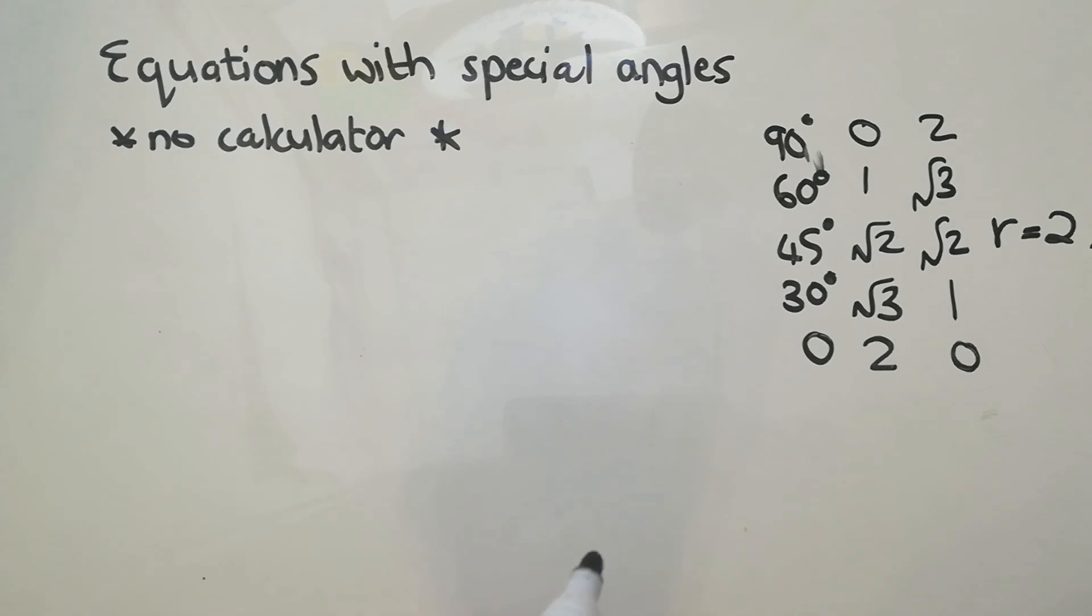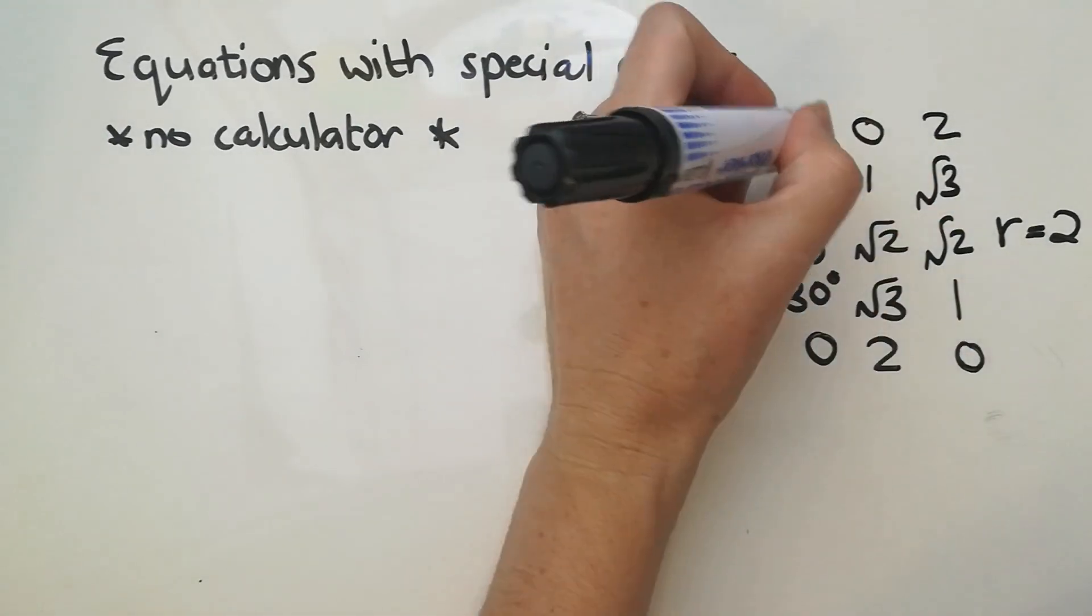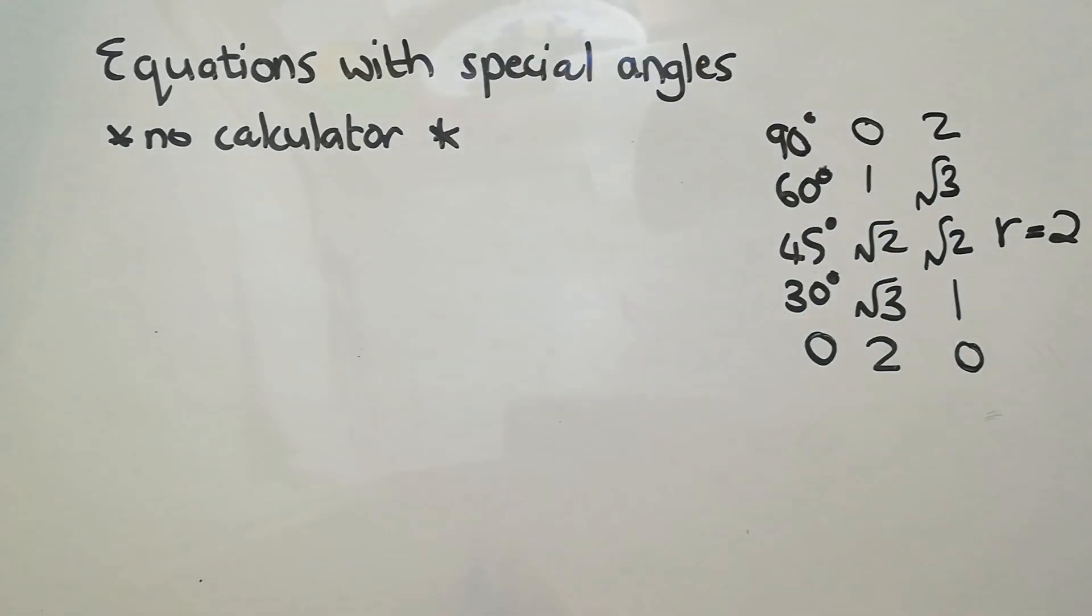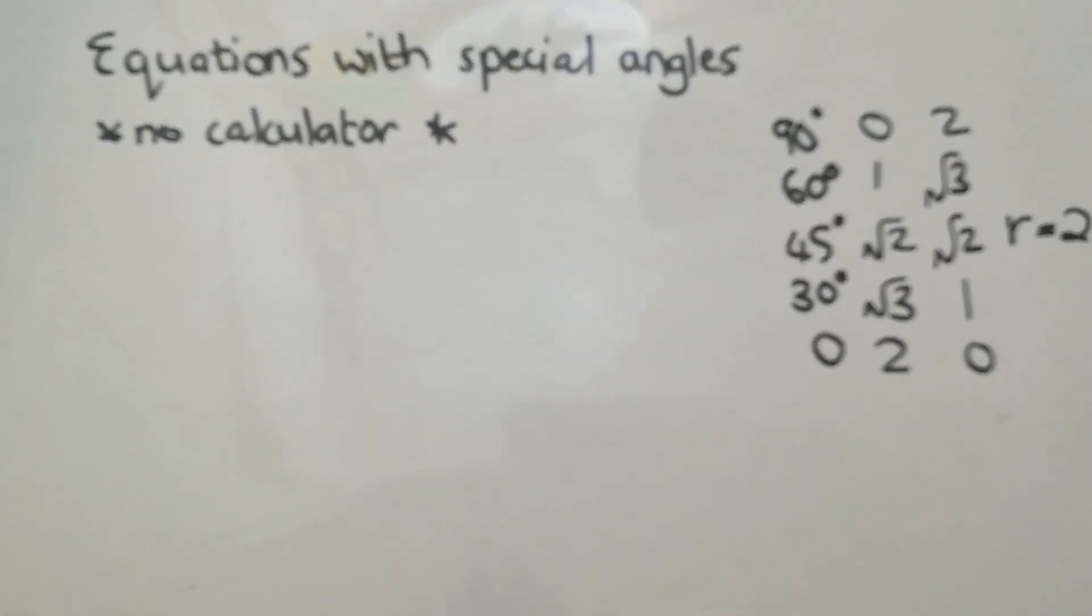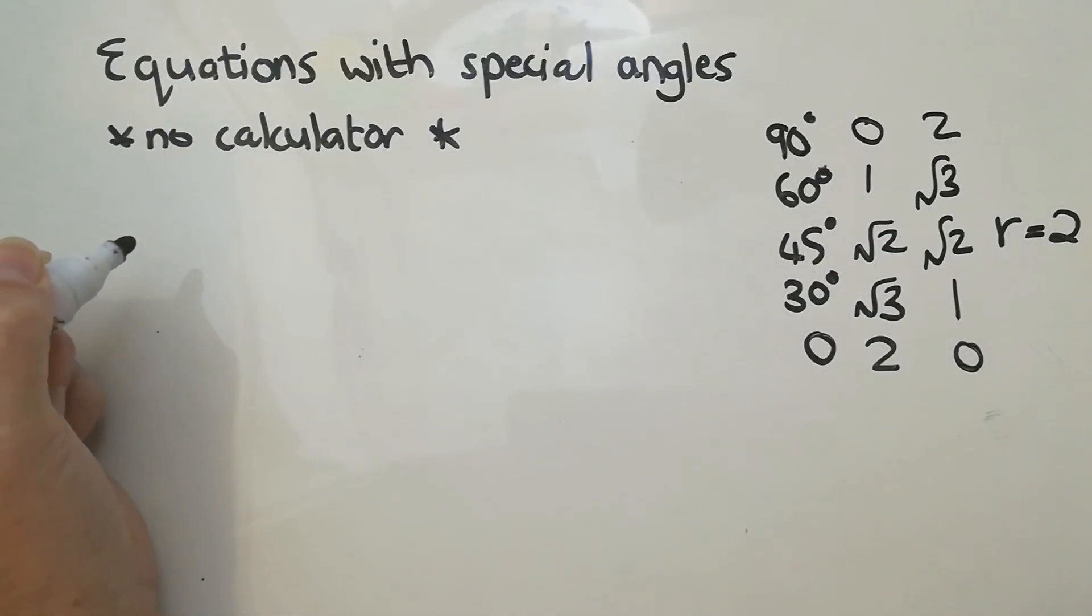There is an argument about whether this can be done on the calculator. For many of them, it can. But in terms of the risk, the calculator always rationalizes the denominator. So you want to be careful that it's not obvious that you have used a calculator. So it's probably not safe to do that.